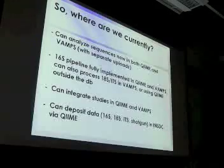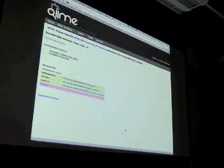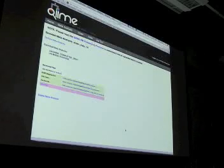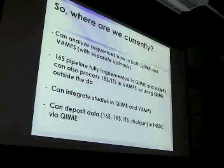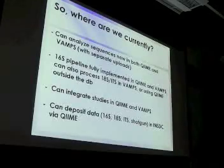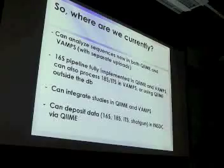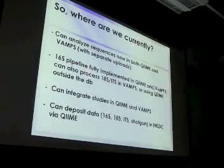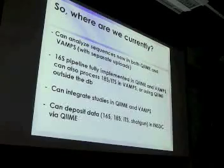Both in QIIME and in VAMPS — currently separately — you can integrate data from a whole bunch of different studies. We've got the mapping files and the OTU table and you can download any of these just by clicking on them. You can also deposit data including 16S, 18S, ITS, and shotgun data in INSDC — a collaboration that includes GenBank, EBI, and DDBJ — making your data public. You can do that very easily via QIIME; it's just one click if you've got everything sorted out with your deposition.